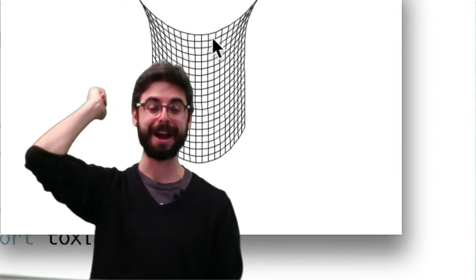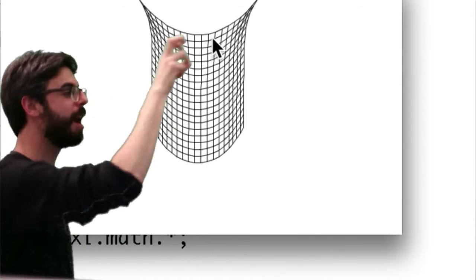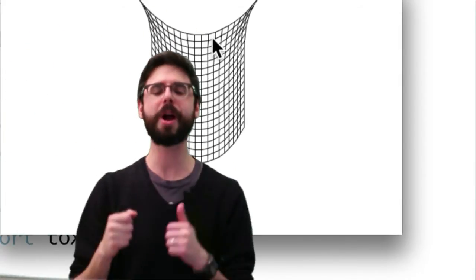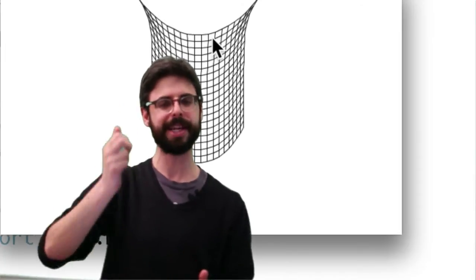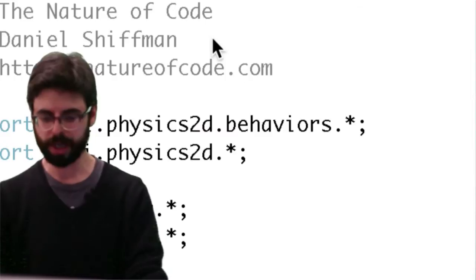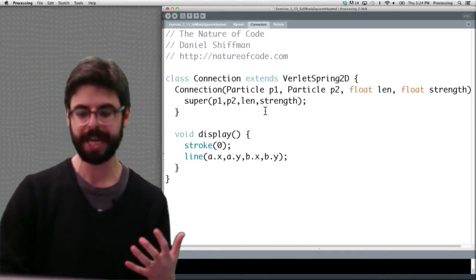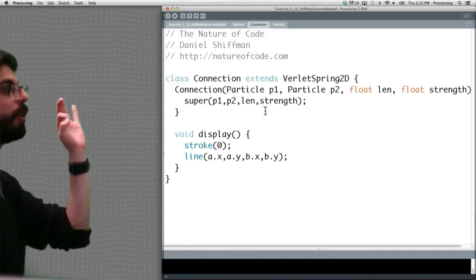If you look at any image processing example, for every x, for every y—we're doing the same here. Make a particle for every x and y, connect each particle above, down, left, and right. Looking through the code, we can write our own class that extends VerletSpring2D.